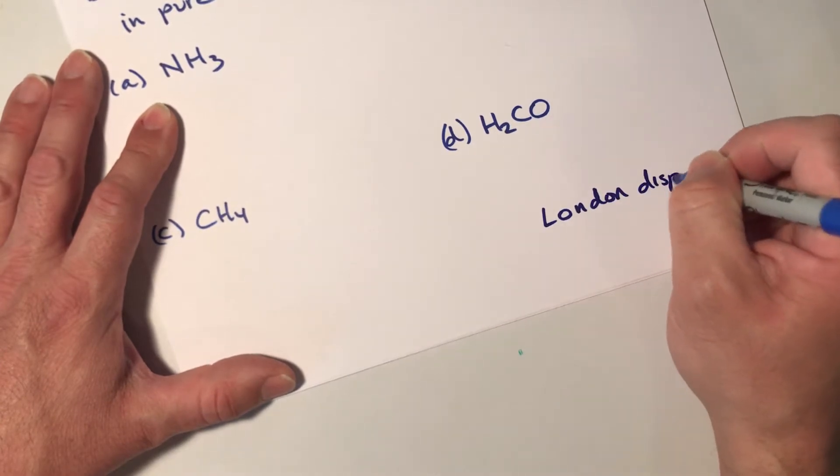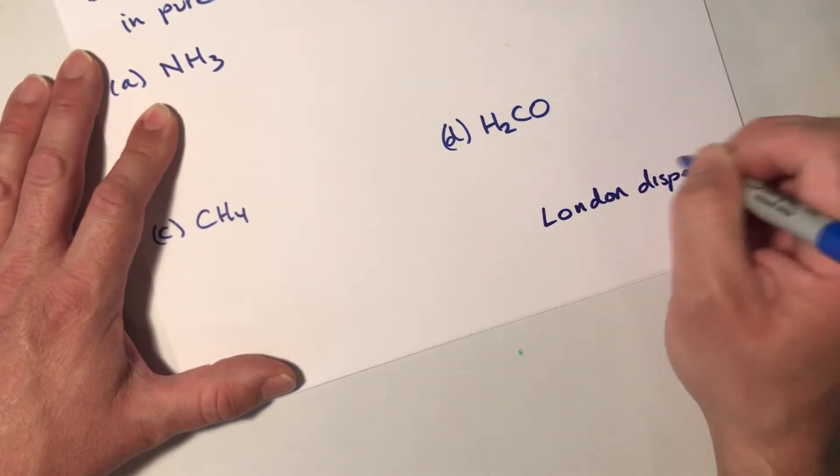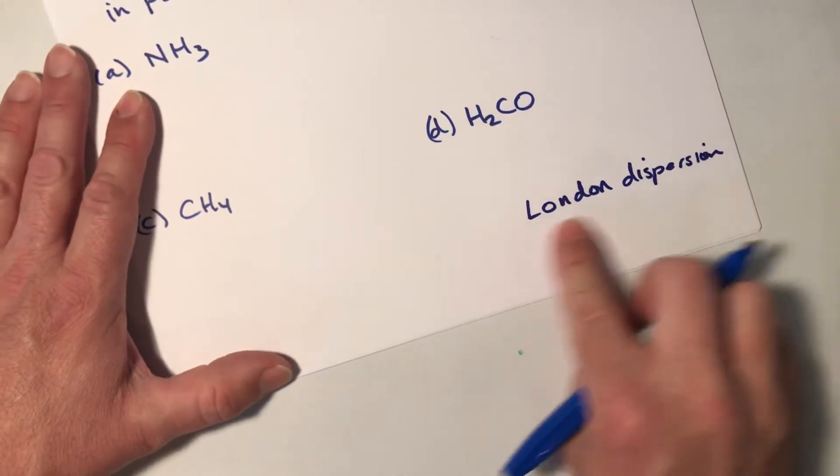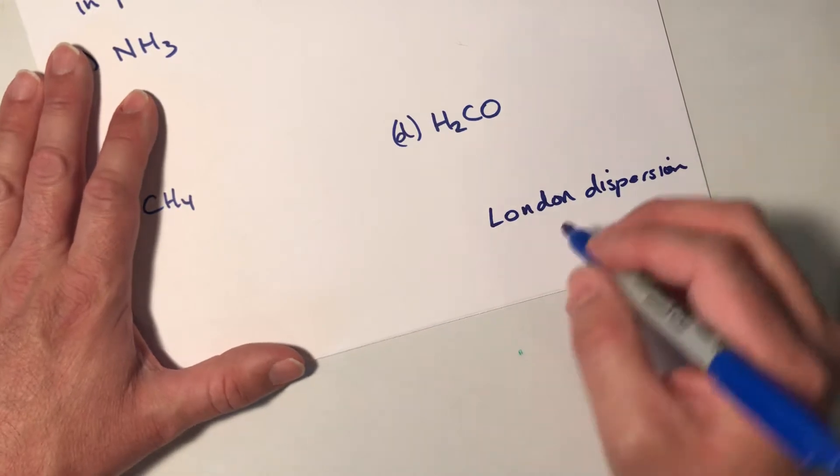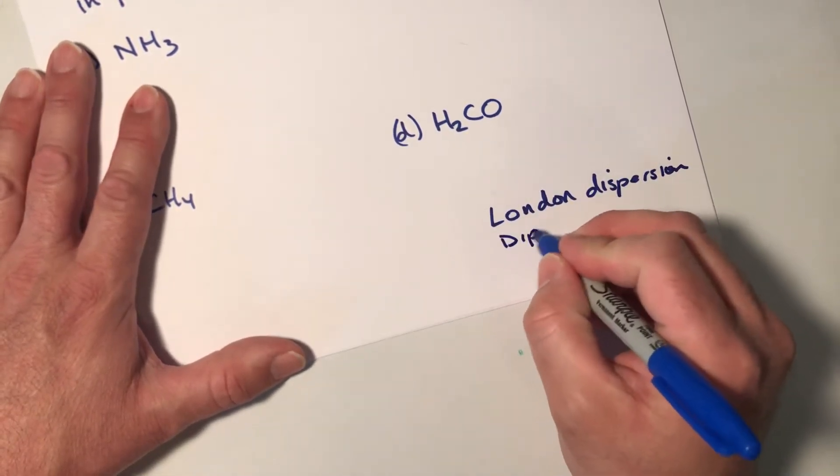And remember, all molecules are going to exhibit London dispersion forces to one degree or another because those are due to the fact that the molecules have electrons and they induce these temporary dipoles.